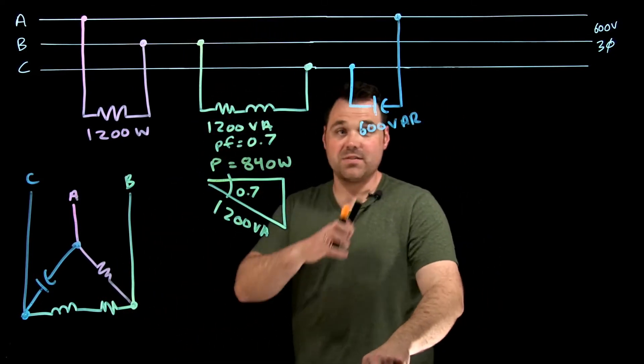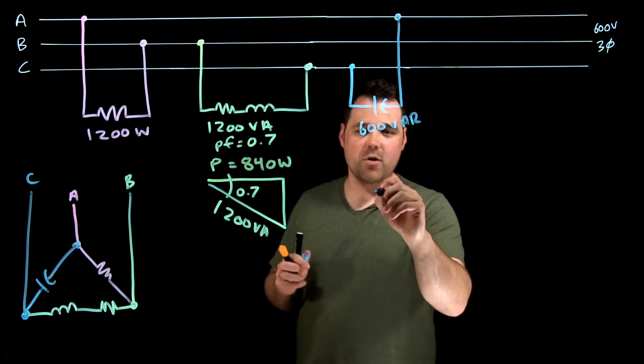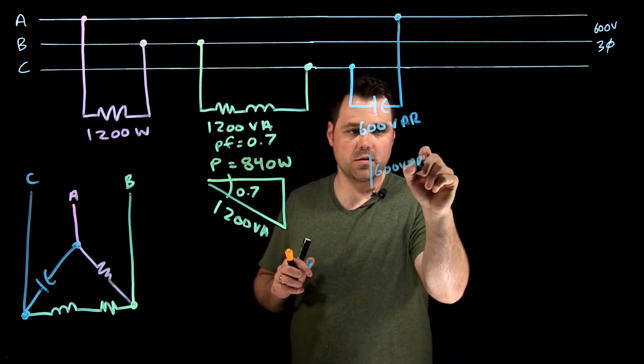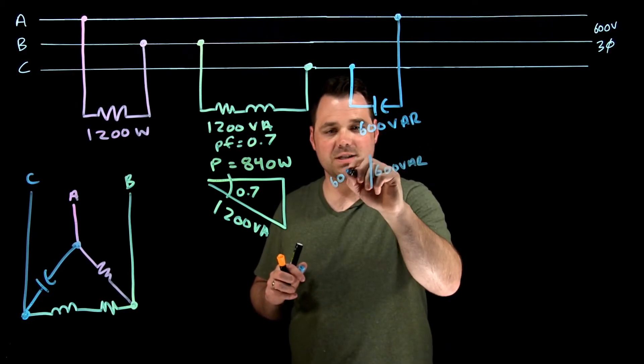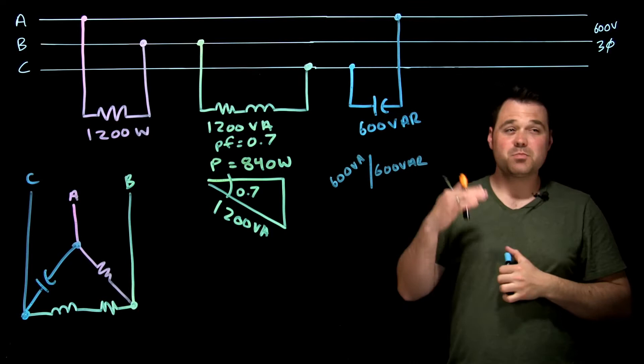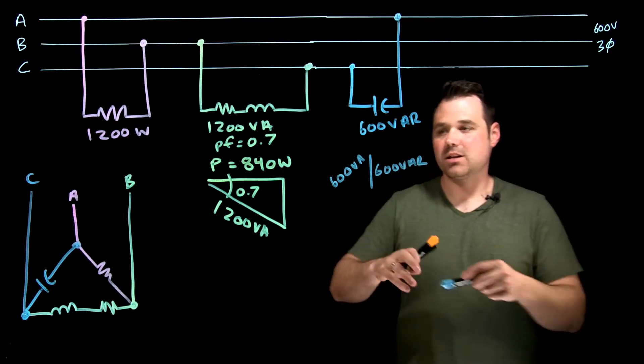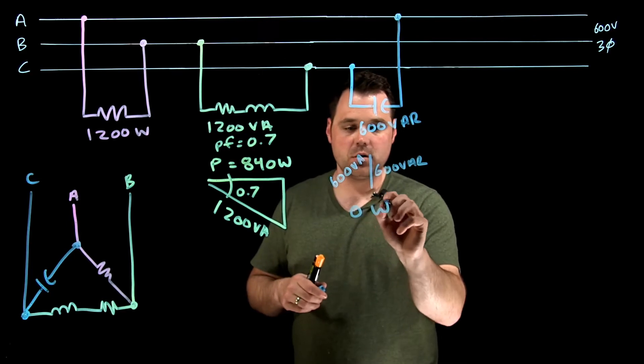Now the other one I want to look at is phase C, and I want to figure out my watts here. Well, if I've got 600 var, that means I've got 600 VA. Because the capacitor is pure, there is no watts. That's going to be 0 watts.